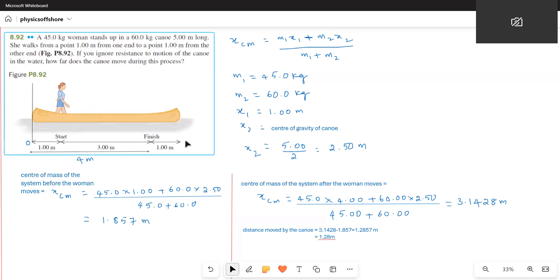This question is based on the center of mass. This is the canoe. Its mass is 60 kg and the length is 5 m. Now the lady is standing at a distance of 1 m from one end. So we take this end as the origin and she is standing 1 m from the origin. The mass of this lady is 45 kg.